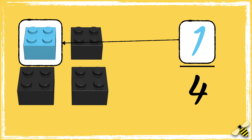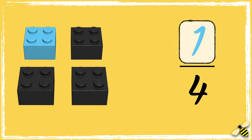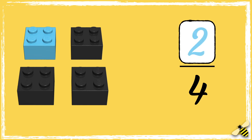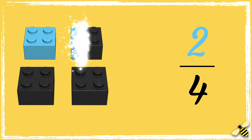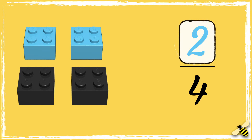The top number is the part, which in this case is one blue brick, so the numerator is one. What if we changed the numerator? How does that change the fraction? If I change the numerator to two, that means the parts have changed. How many blue bricks should I have now? I should have two bricks out of four that are blue.